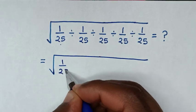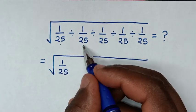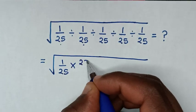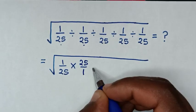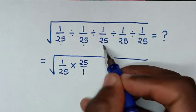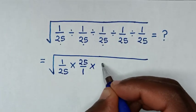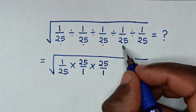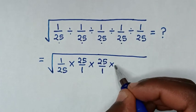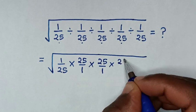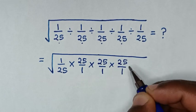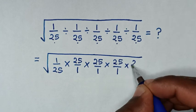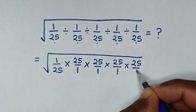Divided by 1 over 25 is the same as times 25 over 1. Then divided by 1 over 25 is the same as times 25 over 1. Then divided by 1 over 25 is the same as times 25 over 1. Then divided by 1 over 25 is the same as times 25 over 1.